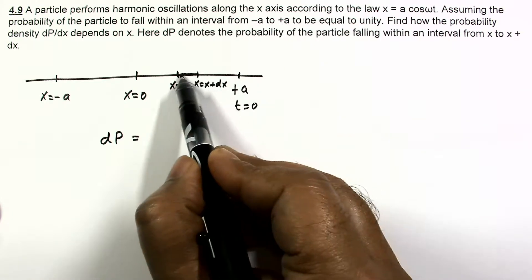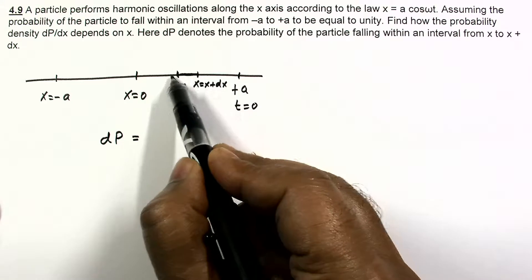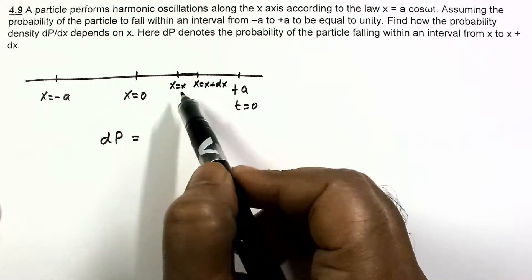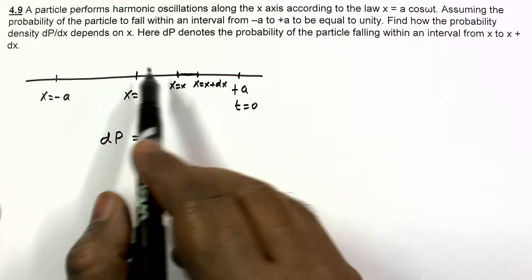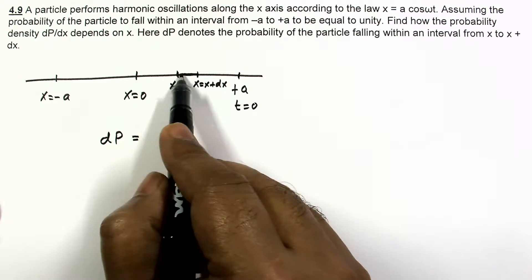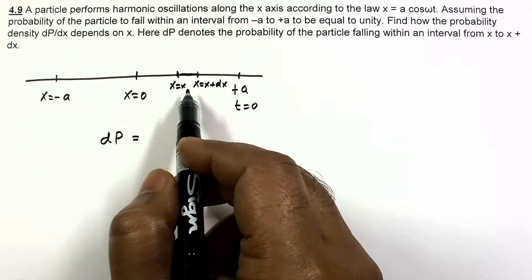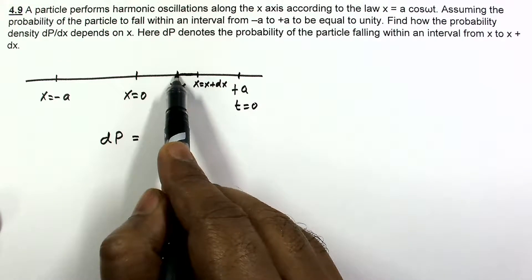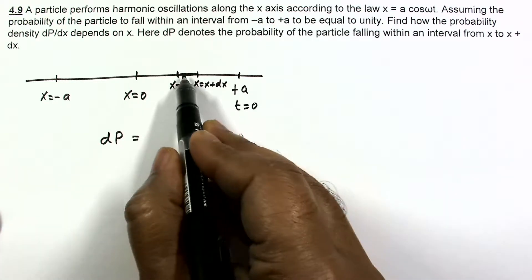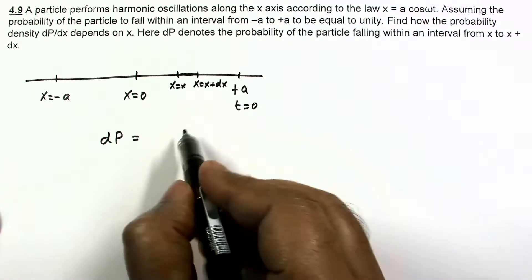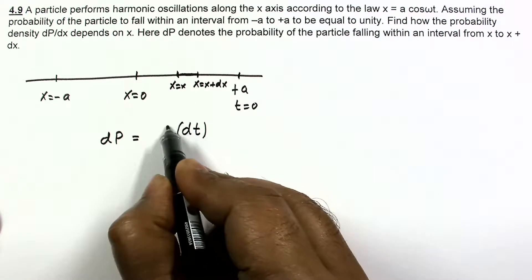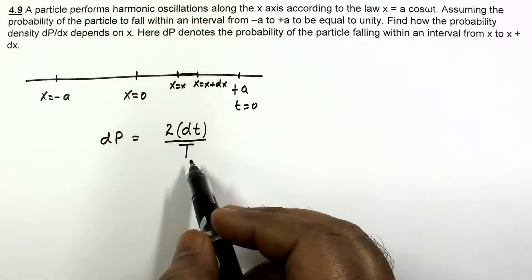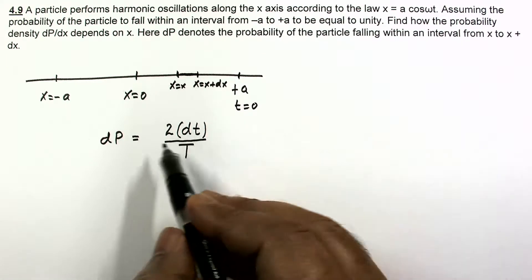The time interval in which the particle will fall in this region will be some dt. While the particle is going in one direction, it will be in this region for time interval dt. But for one total time period it will return as well, so it will also be found in this region for the same time interval dt. So in one time period it will be found twice in this region.